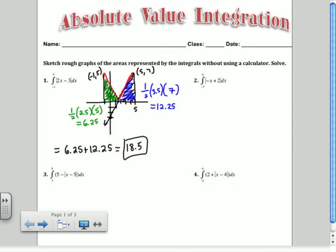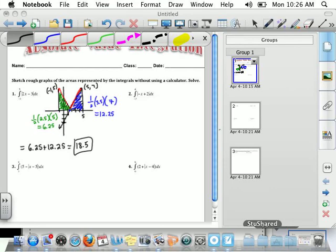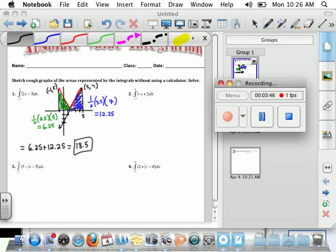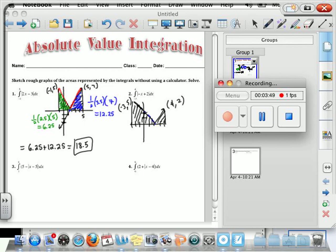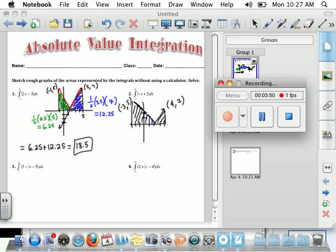Okay, so my whole area is 6.25 plus 12.25, which is 18.5. So I did all of that without even really using any calculus, right? Just drawing a picture. Okay, so how about this one? So think about what this one's going to look like. So we're doing your homework as you get along.